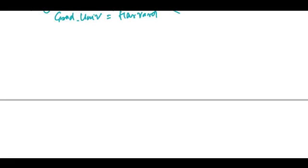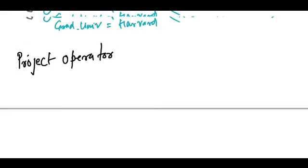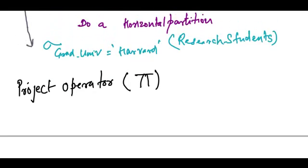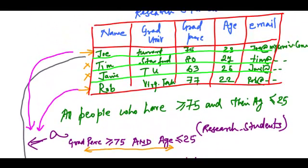Now we will look at another operator known as the project operator. This is a unary operator. The project operator is denoted by the pi symbol. This operator is used to create a vertical partition.